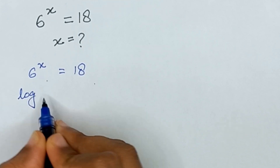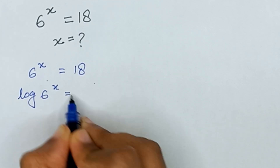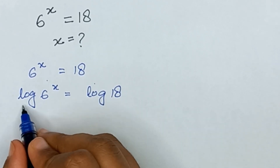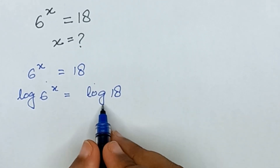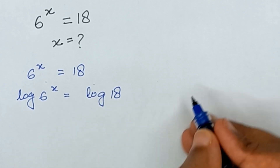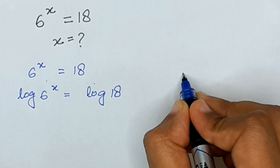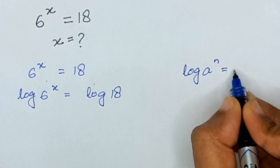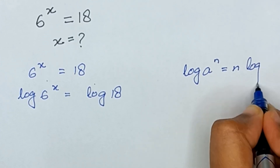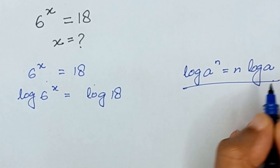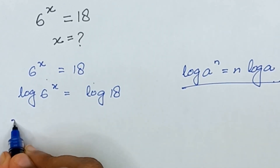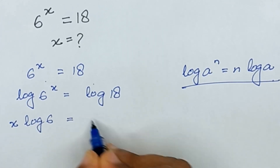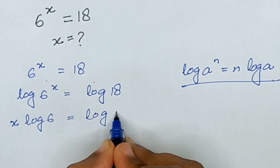To find the value of x, we will apply log on both sides. So it will be: log of 6 raised to the power x is equal to log of 18. By applying the law of logarithm — log of a raised to the power n equals n·log(a) — it becomes x·log(6) = log(18).